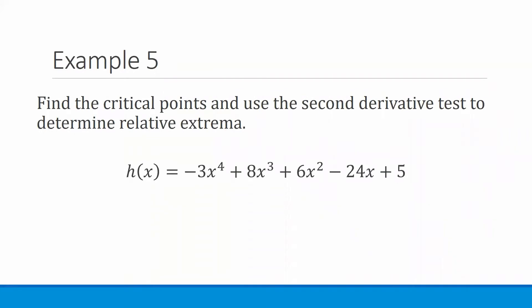Let's go over a couple more examples. In example five, we want to find the critical points and use the second derivative test to determine the relative extrema. The function is h(x) = -3x⁴ + 8x³ + 6x² - 24x + 5.